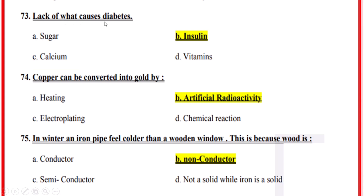Lack of what causes diabetes? Correct option B — insulin. Copper can be converted into gold by — correct option B — artificial radioactivity. In winter, an iron pipe feels colder than a wooden window; this is because wood is — correct option B — a non-conductor.